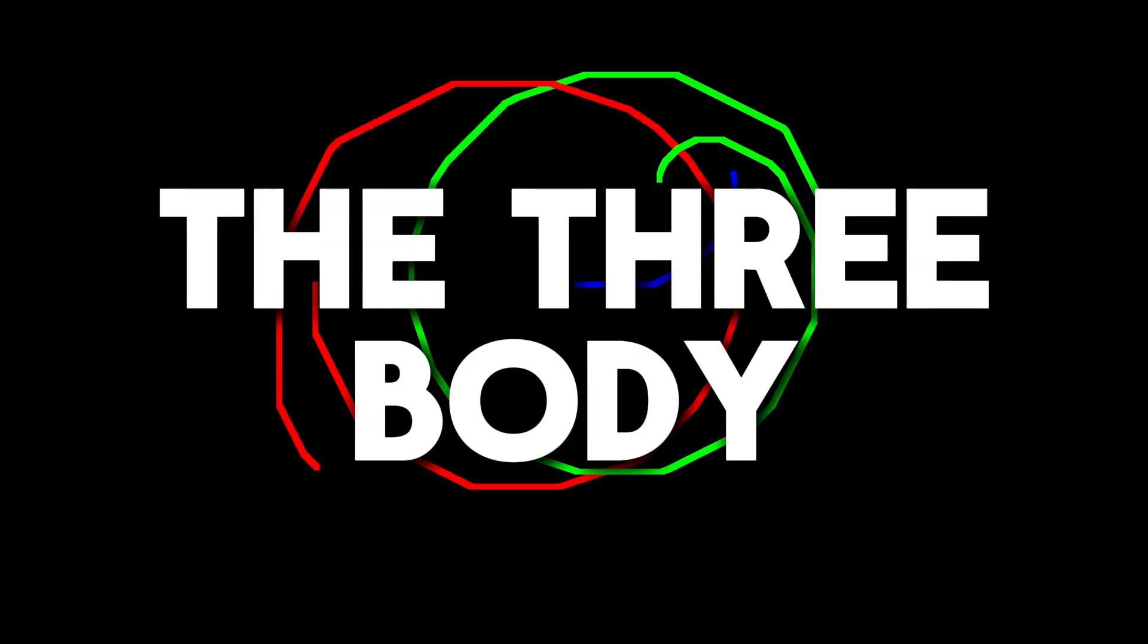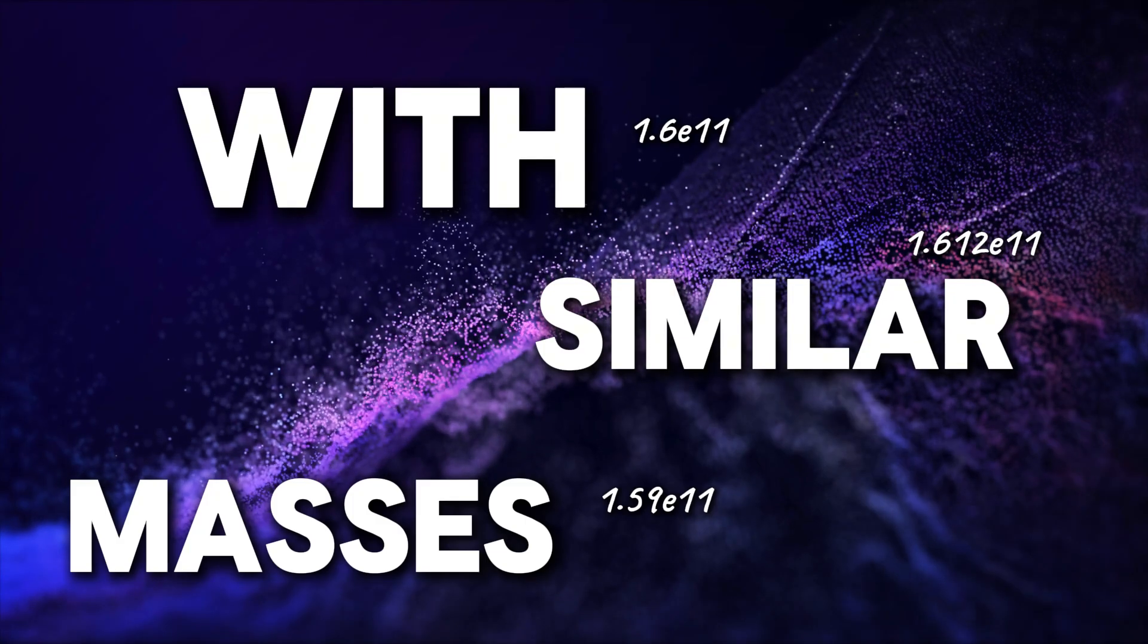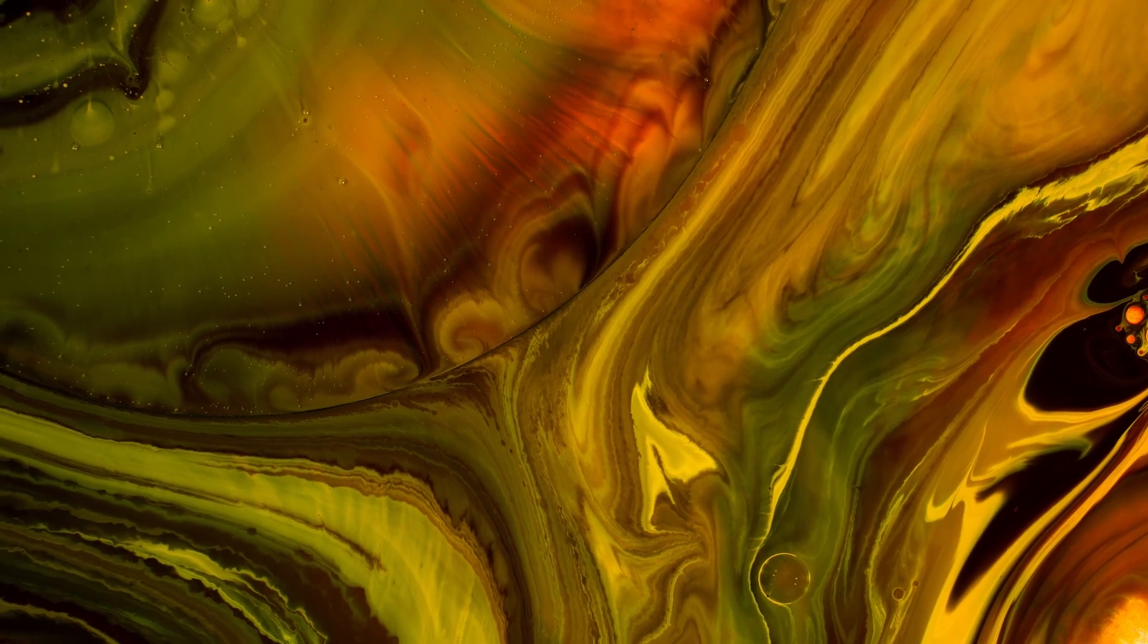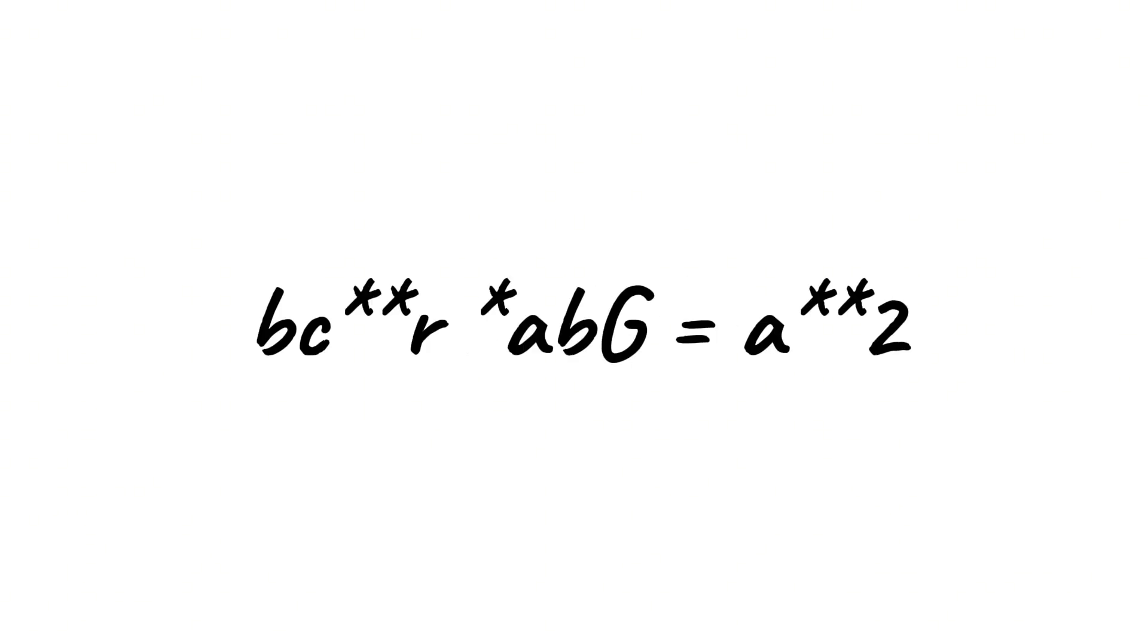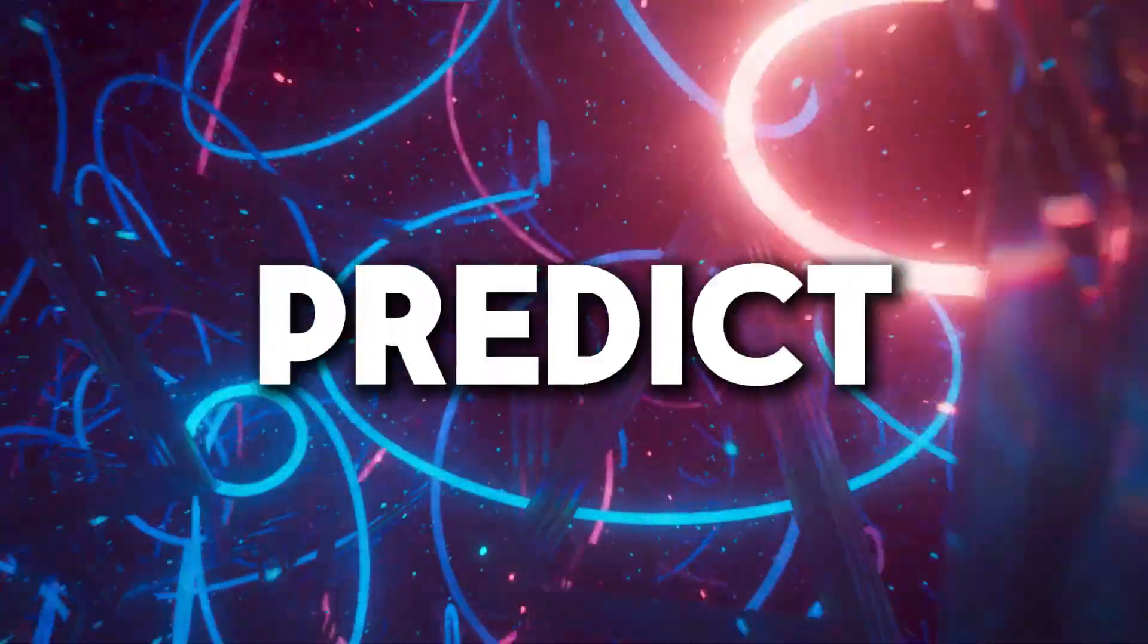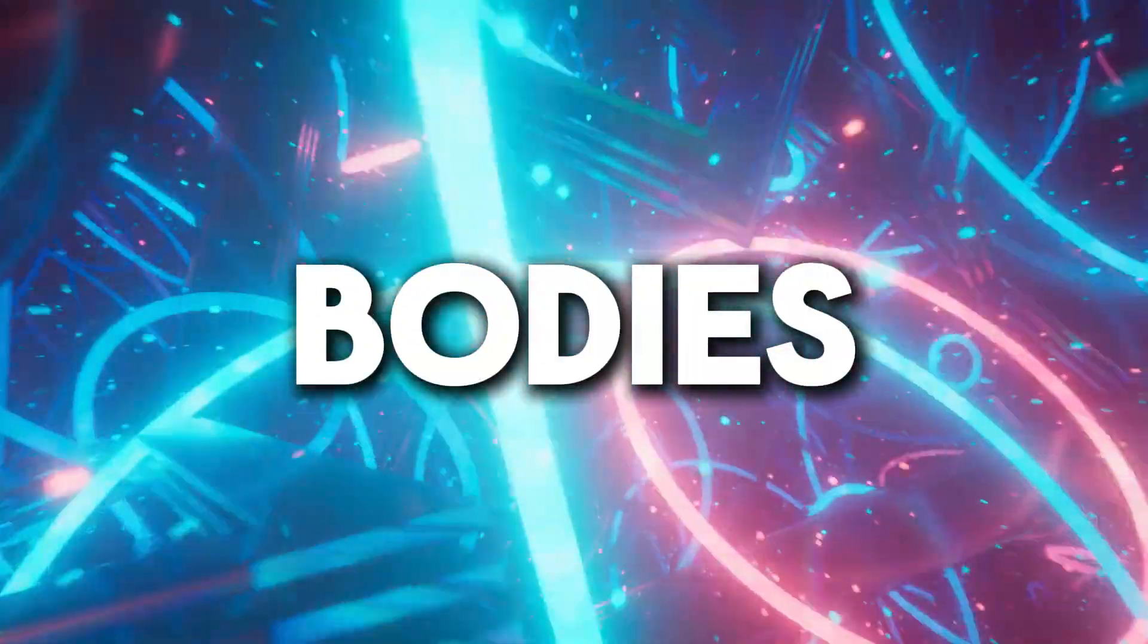This is. The three-body problem exists when three celestial bodies with similar masses exert gravity on each other. The three-body problem is chaotic for most initial conditions, and it's literally impossible to write an equation to accurately predict the location of all three bodies at all times.